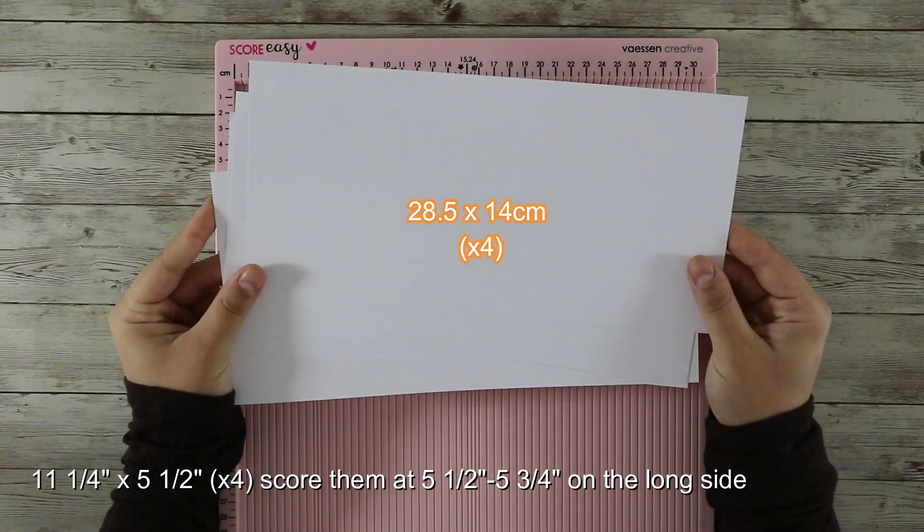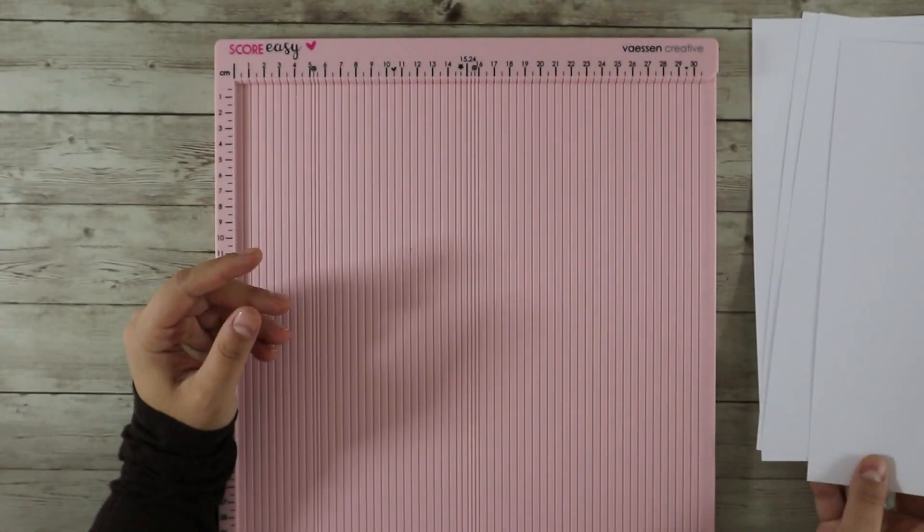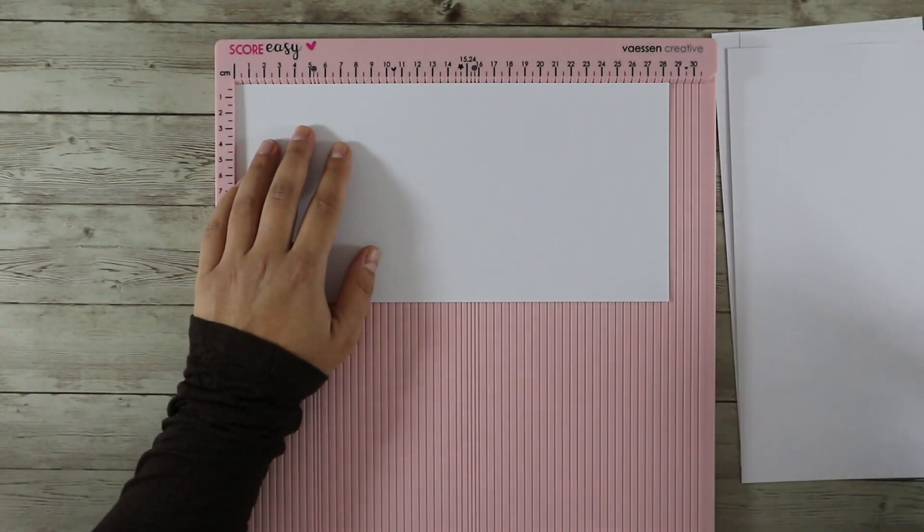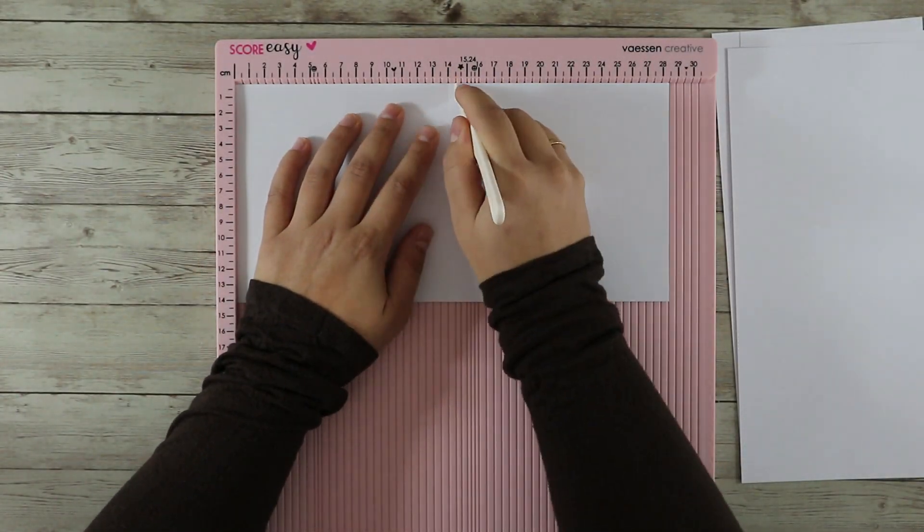To make the pages I'm going to use 4 sheets of white cardstock and score all of them on the long side at 14 and 14.5 cm.